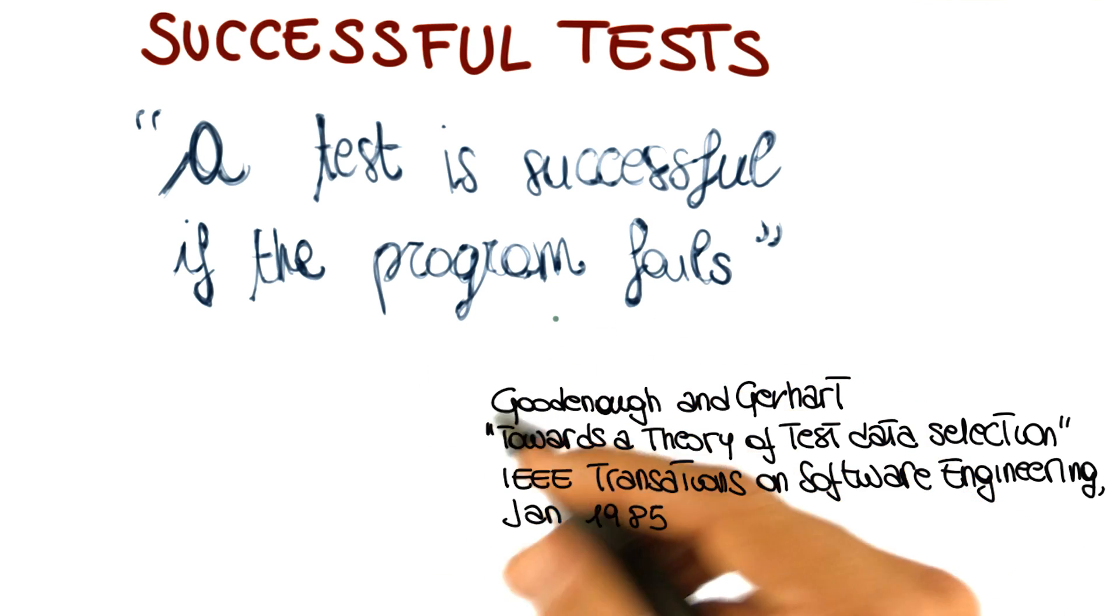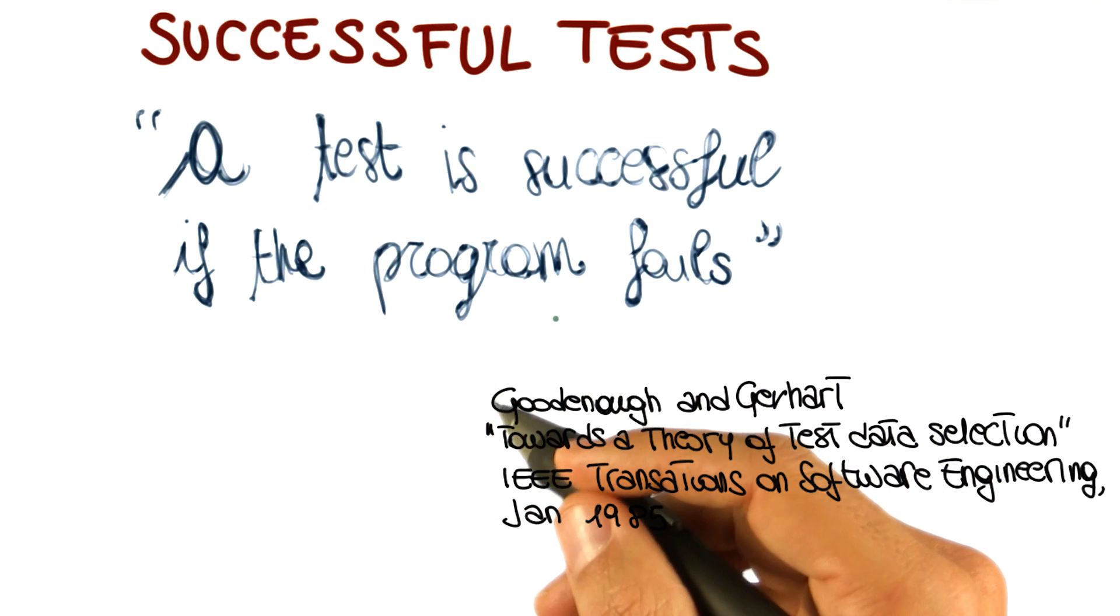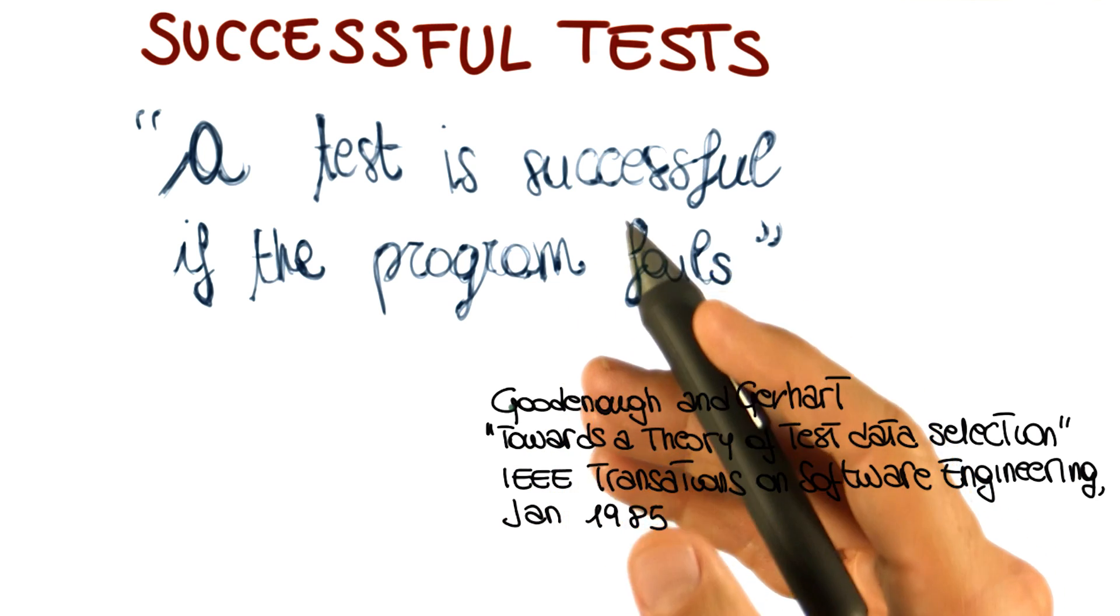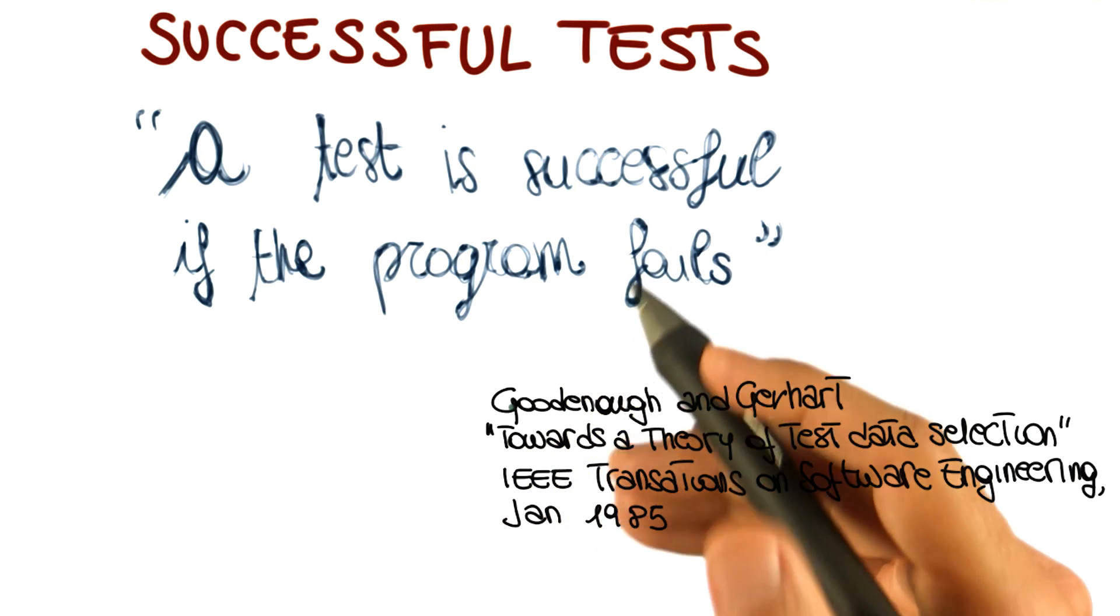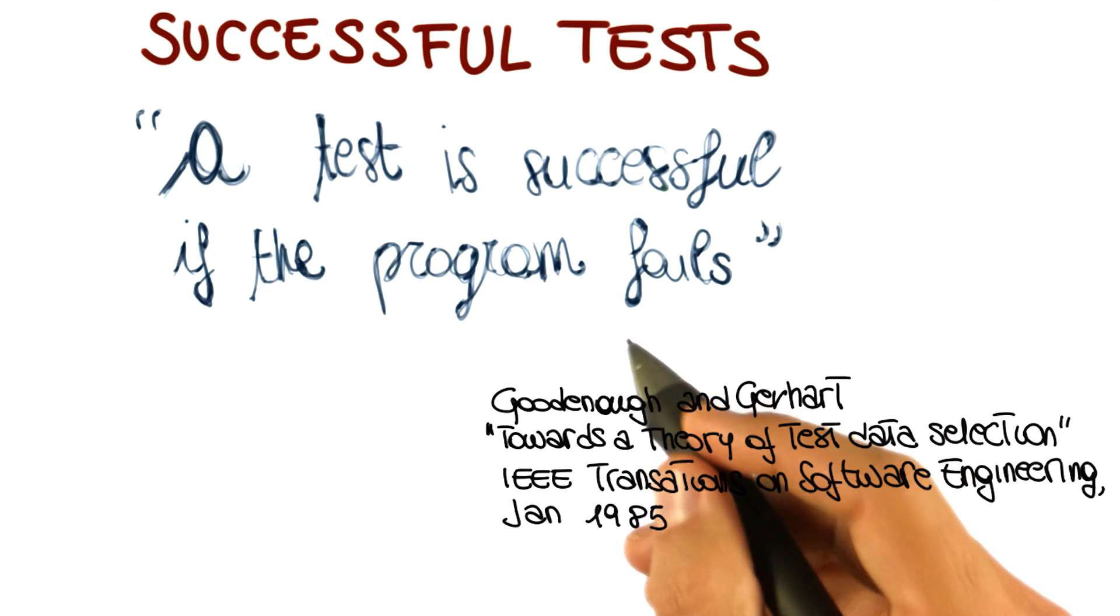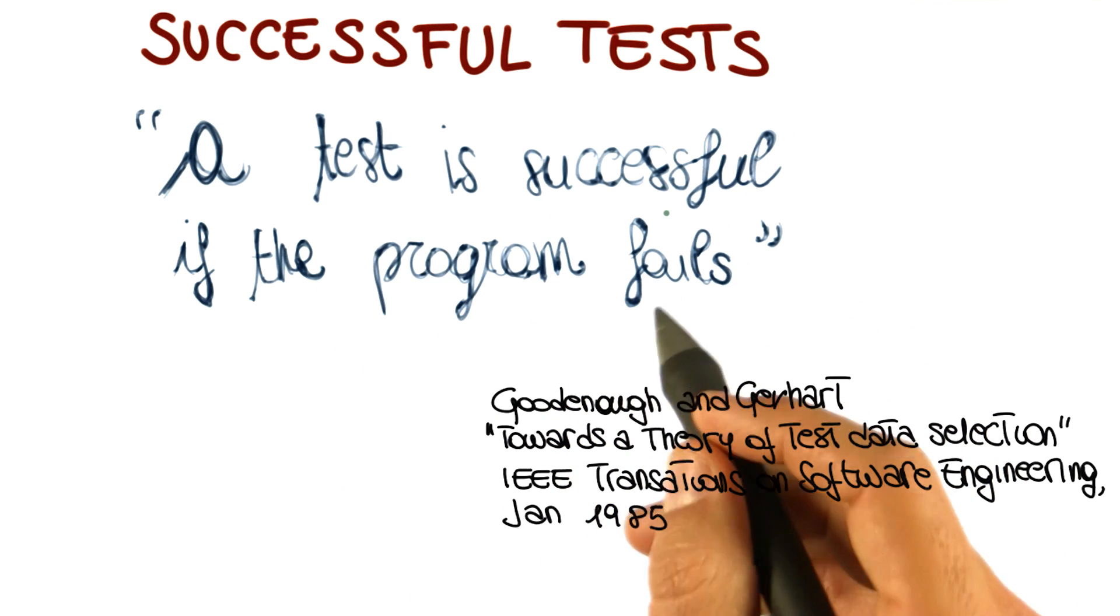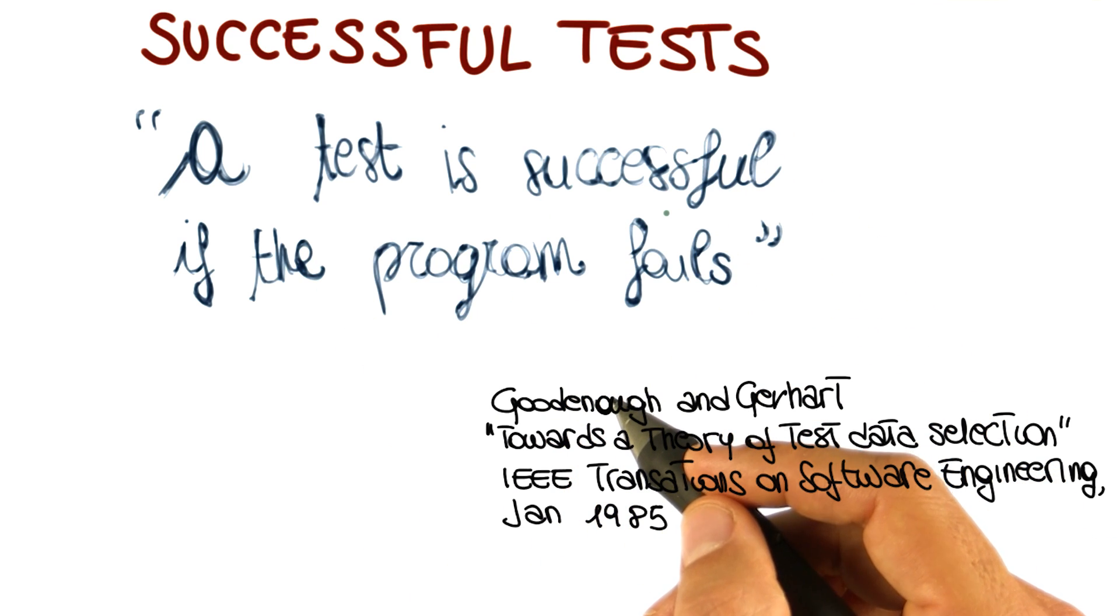If a set of tests does not produce any failure, we are either in the extremely unlikely case of a correct program or in the very likely situation of a bad set of tests that are not able to reveal failures. That is why we say that a test is successful if it can show that there are problems in the program.